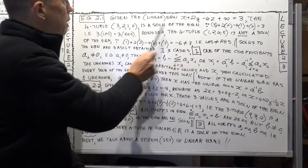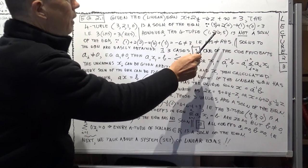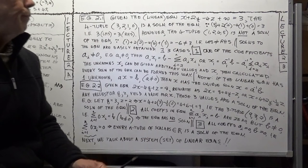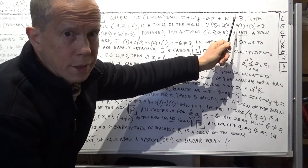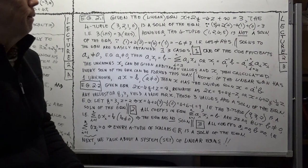Let's actually do it. Plugging in x=3, y=2, z=1, w=0: we get 1×3 + 2×2 − 4×1 + 0, which is 3 + 4 − 4 + 0 = 3. The left-hand side is 3 and the right-hand side is 3, so this four-tuple is a solution to this equation.